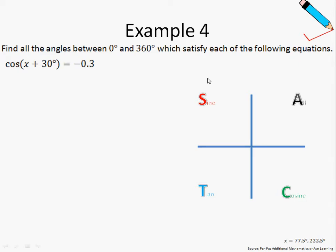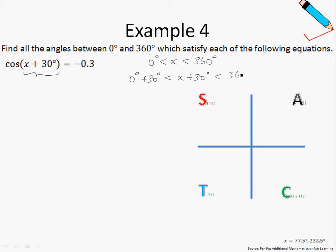Find all the angles between 0 degrees and 360 degrees which satisfy each of the following equations. Notice something special about this example: the angle we're looking for is no longer just x — now we have x plus 30 degrees. So if the range of x is between 0 and 360 degrees, then by adding 30 degrees throughout the entire inequality, we arrive at: x plus 30 degrees is between 30 and 390 degrees. We will be working with this inequality throughout this entire example.